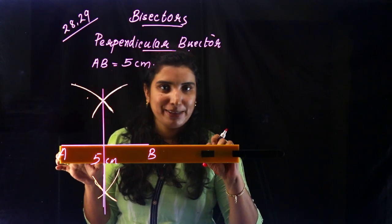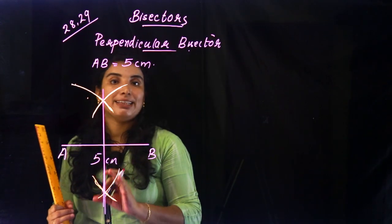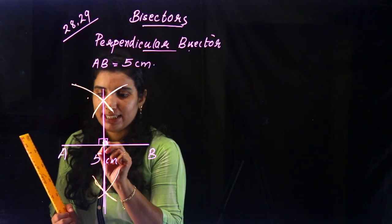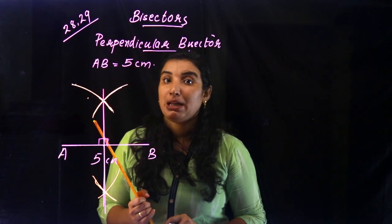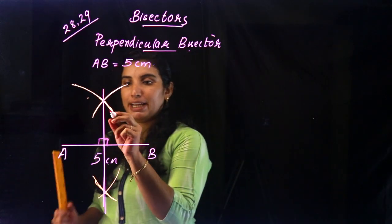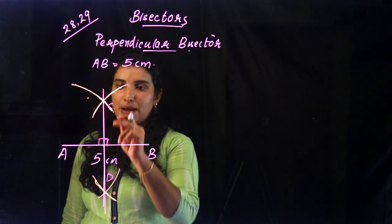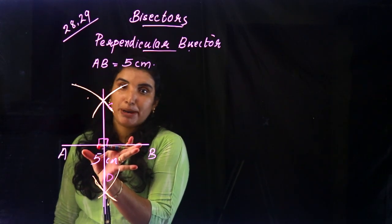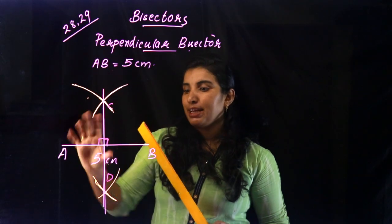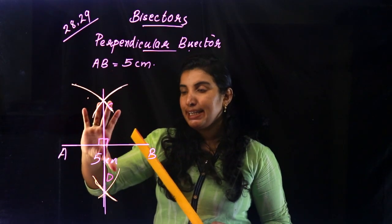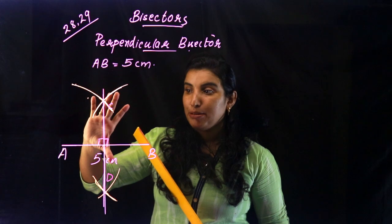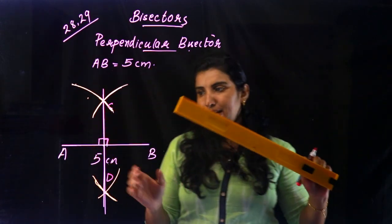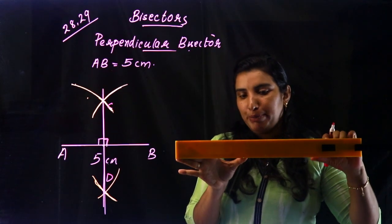We will do this at 2.5 cm. The line is quite perpendicular — 90 degrees. We will take the scale of the bisector. The line is a bisector perpendicularly. AB and CD — this is a perpendicular bisector. This is a perpendicular bisector.